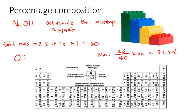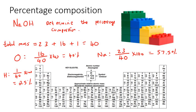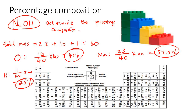For oxygen, that's a mass of 16 out of a total mass of 40. Multiply by 100 and you get 40%. So 40% of the mass of NaOH is oxygen. For hydrogen, its mass is 1 out of a total of 40. Multiply by 100 and you get 2.5%. If you add up all these percentages, they always add up to 100%.